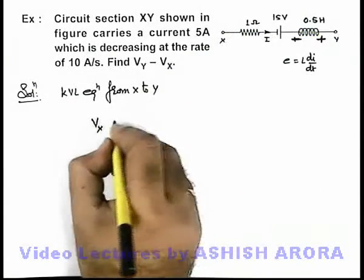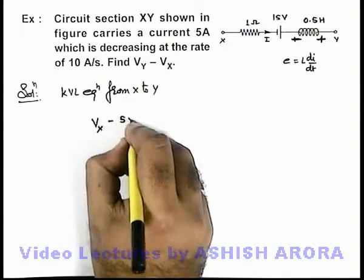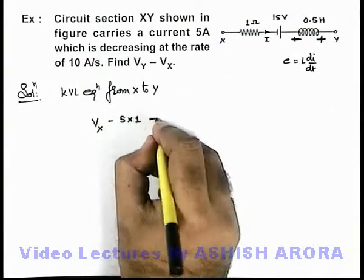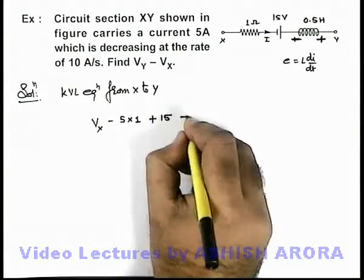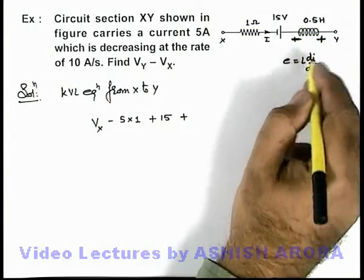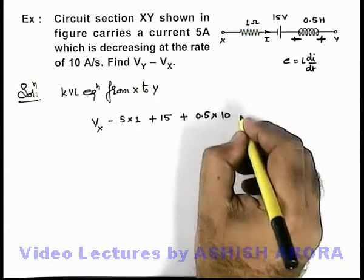Then along with this current it will be minus IR, where current is 5 amperes and resistance here is 1 ohm. Then through the battery there will be a rise in potential of 15 volts. Then again there will be a rise in potential due to the EMF induced across the inductor, which is L dI by dt. Here the value of L is 0.5 and dI by dt we are given at 10 amperes per second.